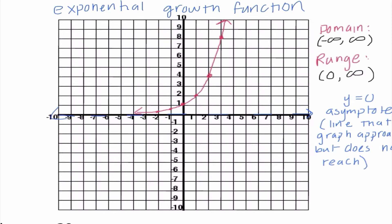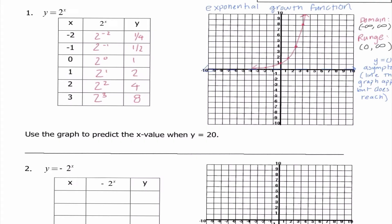This is a good example of a growth function. Some of you may have been wondering why we skipped 8.1 and 8.2 — well, today we're really doing 8.1, 8.2, and 8.4, so it's a lot going on. If this graph continued, we could easily see what x value gives us a y value of 20, and we'd notice it's somewhere between 4 and 5. I know 2 to the 4th power is 16 and 2 to the 5th power is 32, so it's between those two.